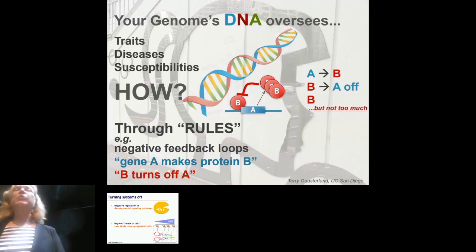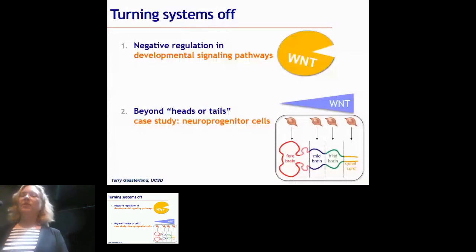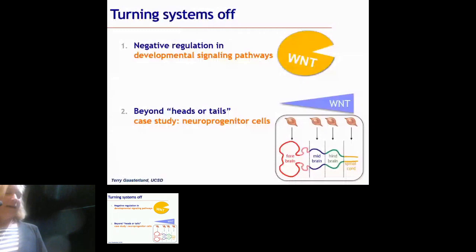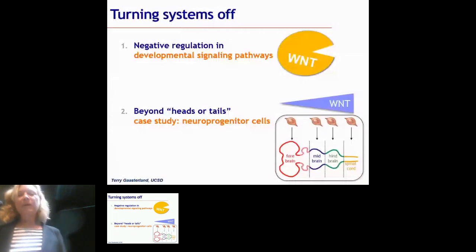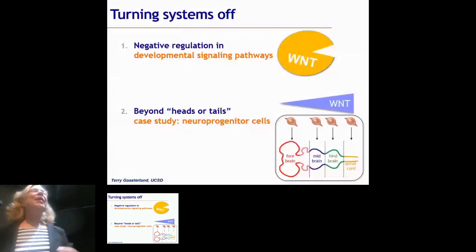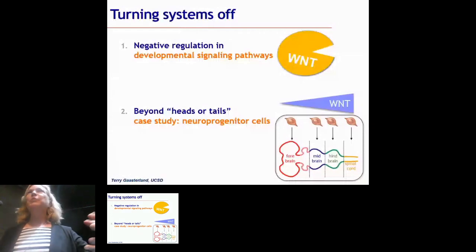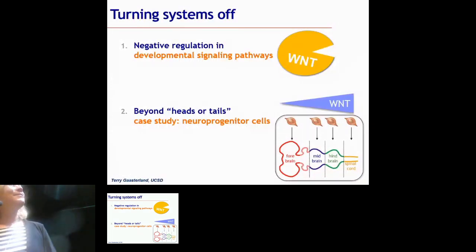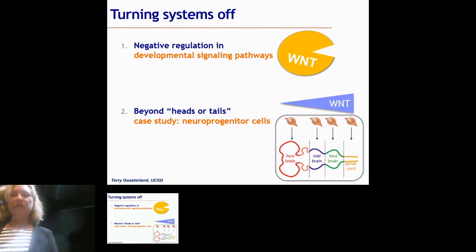Let's take a look at negative regulation in a developmental signaling pathway: Wnt. Wnt is denoted by a yellow circle — it looks a bit like a Pac-Man — and it's a protein that binds to the frizzled receptor. The binding site is represented by the little mouth, and the triangle represents a gradient. We're going to look at Wnt and gradients of Wnt.